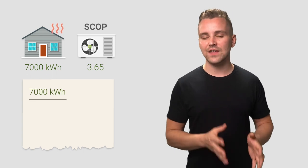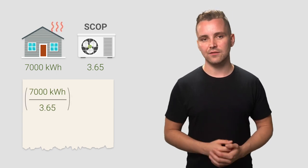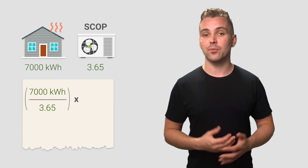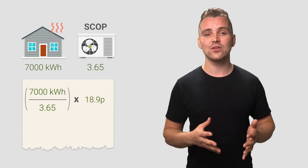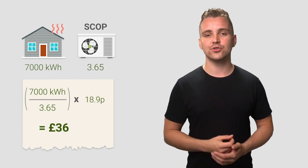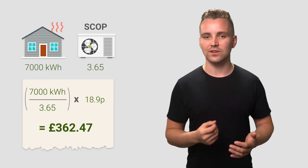For example, a small apartment or flat has an average annual heat requirement of 7,000 kilowatt hours. The average seasonal coefficient of performance for a heat pump in a property of this size is 3.65. So we divide 7,000 by 3.65 and then multiply it by 18.9p, giving us an annual running cost of £362.47.